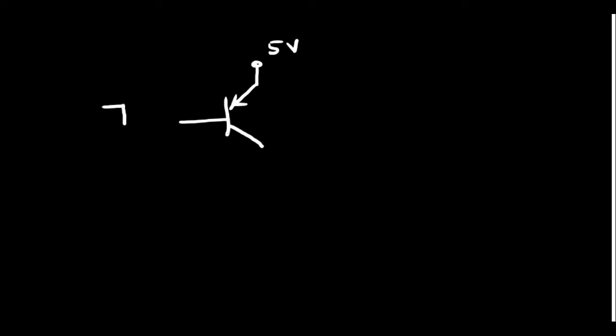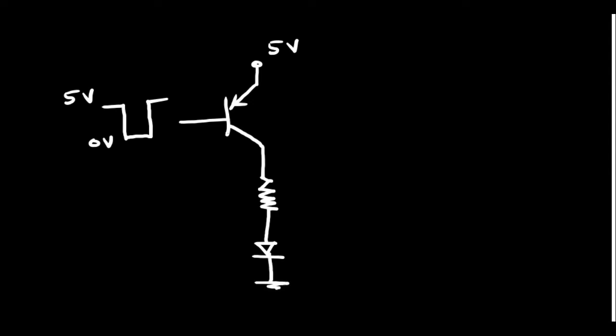Now let us see how to make the transistor a current sourcing device. Here let us use a PNP transistor. To the emitter I will connect 5 volts. To turn on the PNP transistor, on the base we need a low signal — that is 0 volts. In the collector I am going to connect the load. The LED cathode is connected directly to ground, and the anode should get positive potential to make the LED glow. This is the current sourcing configuration.